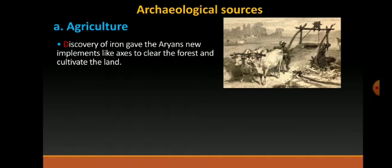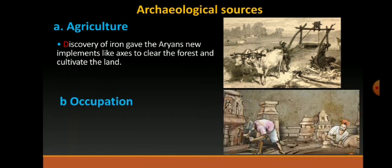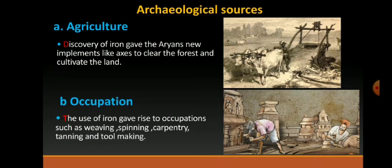This prosperity in agriculture led to other occupations. The use of iron gave rise to new trades by providing durable implements like saws, chisels, hammers, nails, and tongs. This gave rise to occupations such as weaving, spinning, carpentry, and tool making. From agriculture, they started to go for other occupations, and they converted their implements into iron tools.